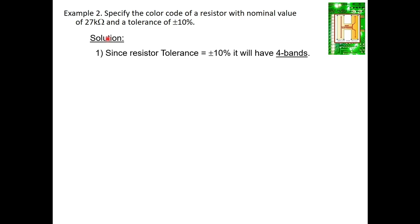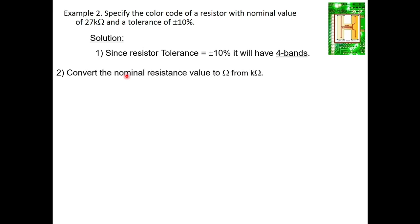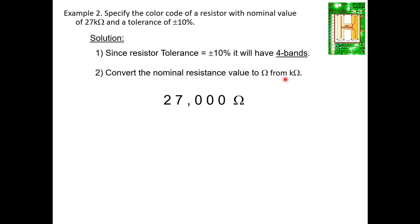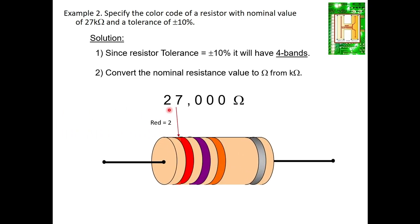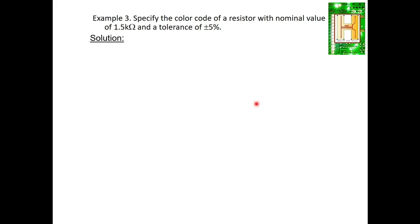Example 2: Specify the color code for a resistor with a value of 27kΩ and ±10% tolerance. Since tolerance is 10%, it is a four-band resistor. Convert 27k to 27,000 ohms. The digit 2 = red, 7 = violet, three zeros = orange (10³ multiplier), and silver = ±10% tolerance. So the color code is: Red, Violet, Orange, Silver.